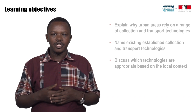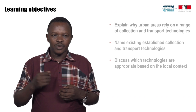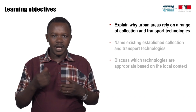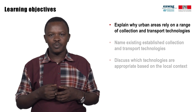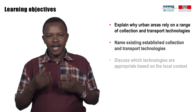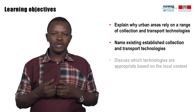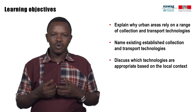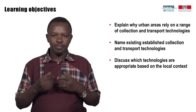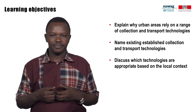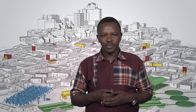Following this module, you will be able to explain why urban areas rely on a range of collection and transport technologies, name existing established technologies for collection and transport, and discuss which technologies are appropriate based on the local context. Urban areas include different physical and socio-economic realities influencing fecal sludge collection and transport.